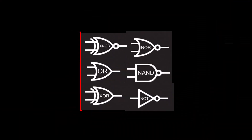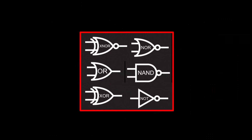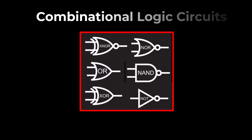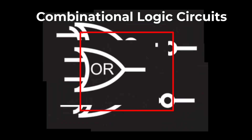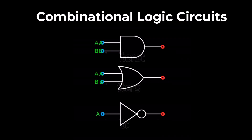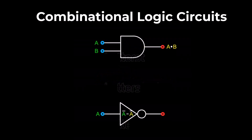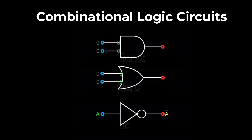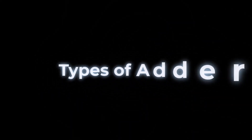Because these circuits are created by combining multiple logic gates, they are also known as combinational logic circuits. Combinational circuits determine their output based on the current combination of inputs, regardless of what inputs were previously used.